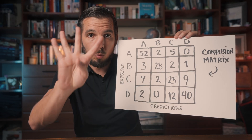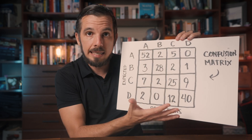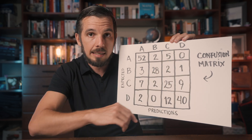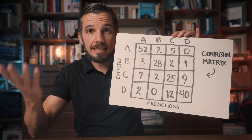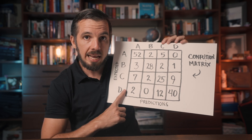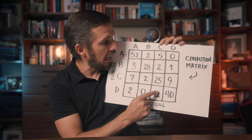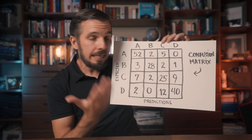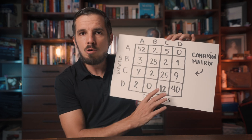Here is a confusion matrix for a problem with four classes: A, B, C, and D. Everything stays the same — we're just accommodating the new classes, and we can read this confusion matrix exactly like we did before. For example, the model made 12 mistakes right here: these were 12 samples expected to be class D but returned as class C. The model, however, did not make any mistakes confusing class D with class B. Nothing changes with multiple classes — we just have a larger confusion matrix with more information in it.